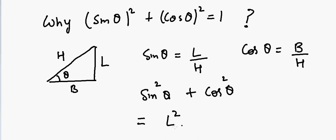L squared divided by H squared plus B squared divided by H squared. But that should be equal to L squared plus B squared divided by H squared.